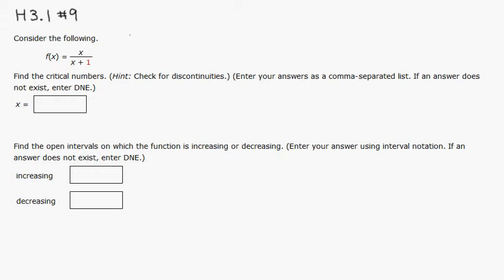Let's take the derivative. f prime of x is equal to... You can see that we can use a quotient rule. So square the bottom, x plus 1 squared.